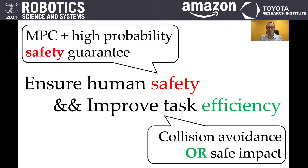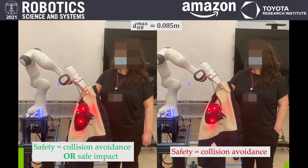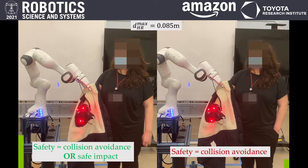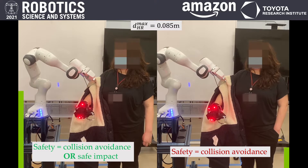In conclusion, in this work we make two contributions. In order to improve task efficiency, we redefine safety in human-aware motion planning as collision avoidance or safe impact. In order to ensure safety, we propose an MPC algorithm that can guarantee safety according to our definition. This video shows a comparison between two algorithms. Both algorithms guarantee safety. However, the algorithm on the left defines safety as collision avoidance or safe impact, while the algorithm on the right defines safety as collision avoidance only.